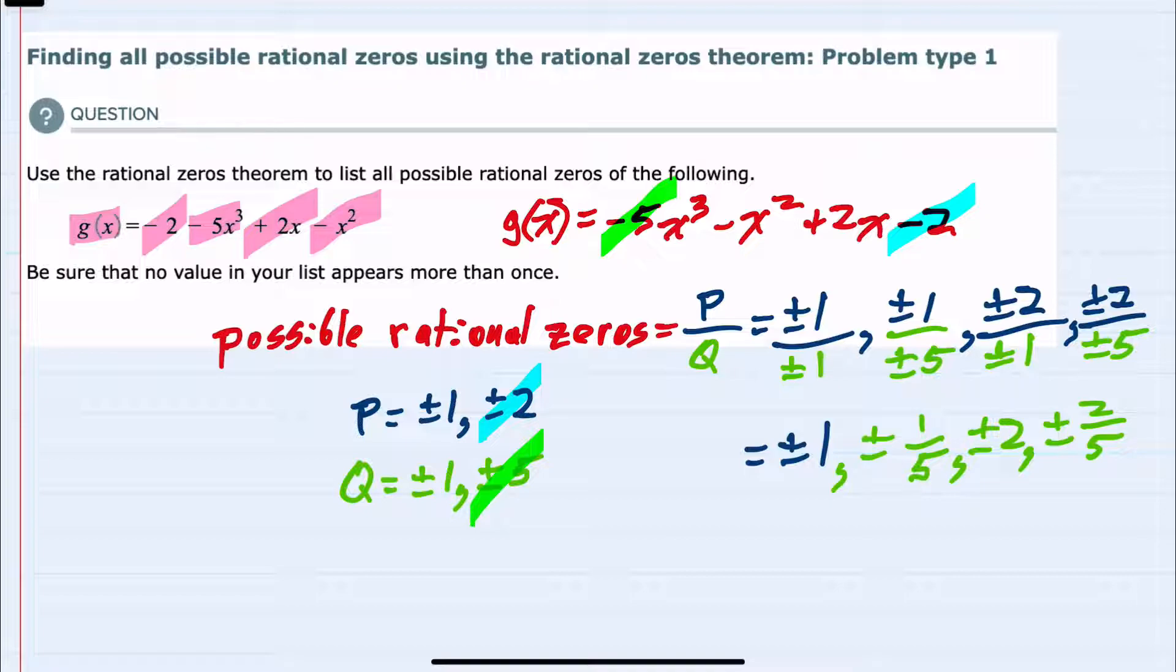So using the rational zeros theorem, we have eight possible zeros: four numbers, each one possible as both a positive or a negative.